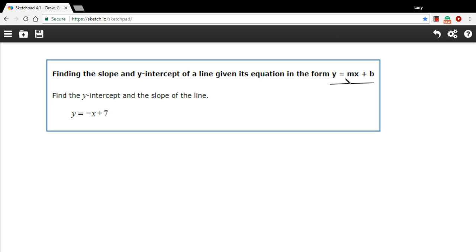Slope-intercept form right here, this y equals mx plus b, the plus b, that is your y-intercept. If you want to say what the y-intercept is here, we just take this chunk right here. It's 7, so the y-intercept is 7. That part's done.